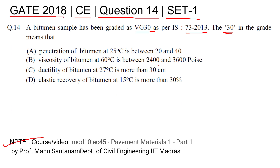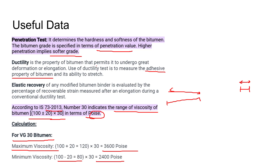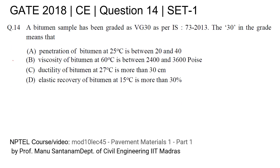The viscosity is given at 60°C in poise. Since this refers to viscosity, none of the other options — penetration value, ductility, or elastic recovery — are correct. Therefore, option B (viscosity) is the correct answer.